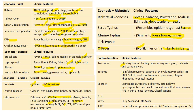Trachoma presents with blinding and non-blinding types, causing entropion, trichiasis, and corneal ulcers; it is a common cause of blindness in developing countries. Tetanus is associated with painful paroxysmal spasms of the voluntary muscles. Neonatal tetanus is 80 to 90% fatal. Types of tetanus include traumatic, puerperal, iatrogenic, idiopathic, and neonatal. Leprosy presents with lepromatous and tuberculoid forms.